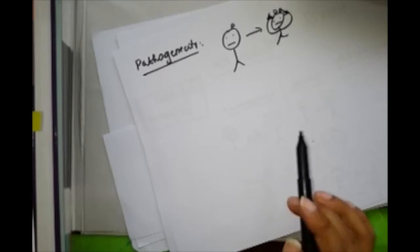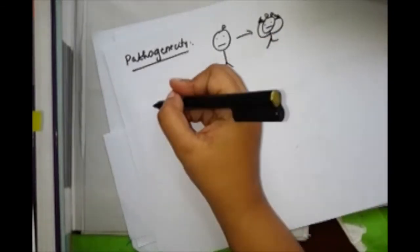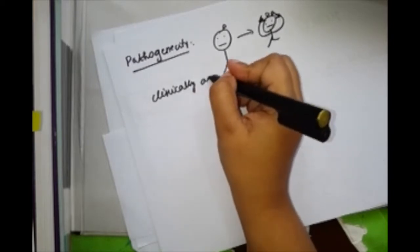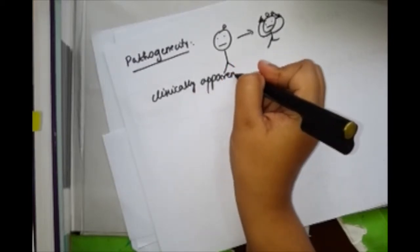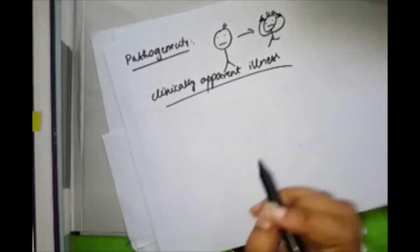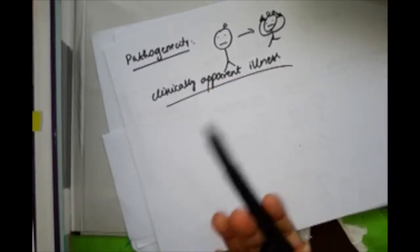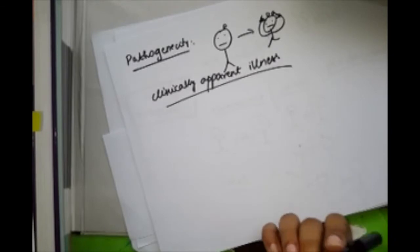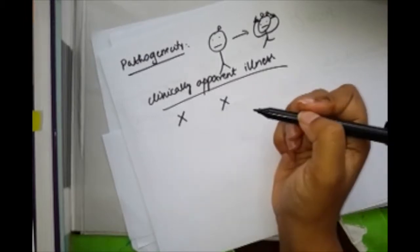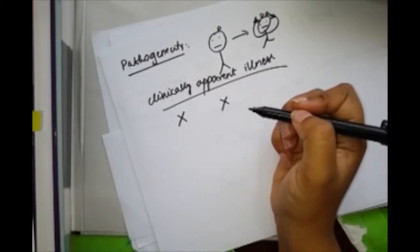This ability to cause clinically apparent illness so that it becomes obvious to the physician—that's pathogenicity. Rats are not infective, so they cannot cause any pathogenicity. Pathogenicity is the later effect of infectivity.